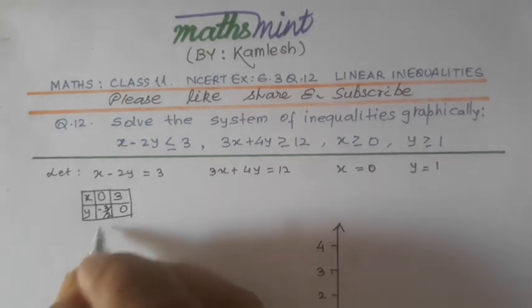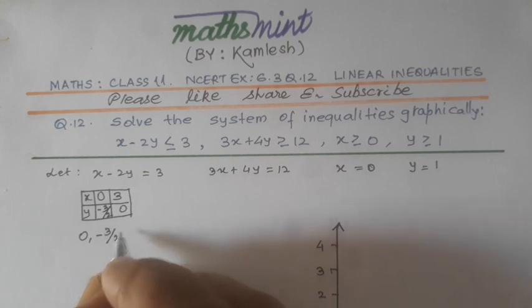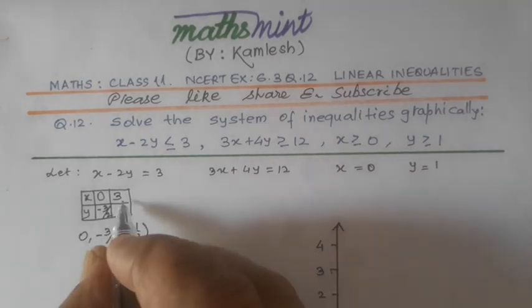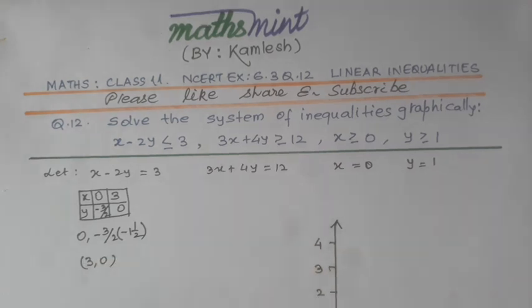So, points to draw are 0 comma minus 3 by 2, or minus 1 and 1 by 2, and the second one is 3 comma 0.